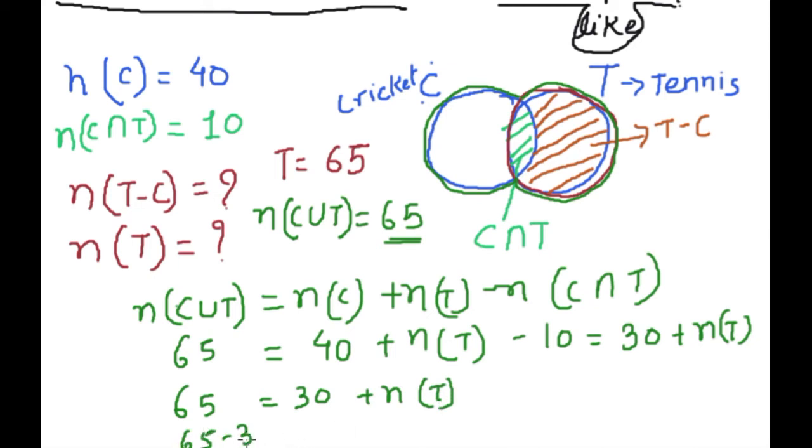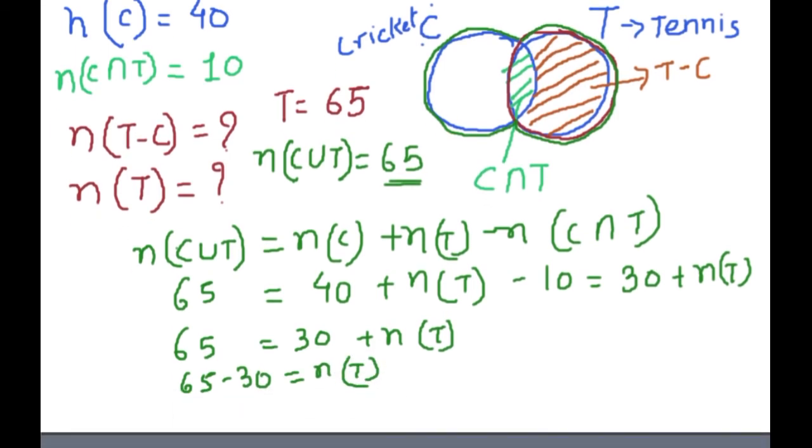65 minus 30 equals n(T), and 35 is equal to n(T). Now we have n(T), number of people like tennis.